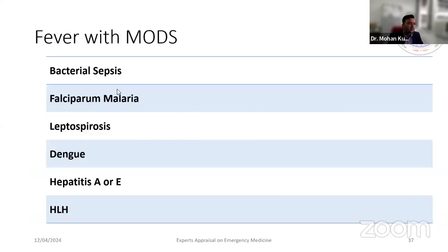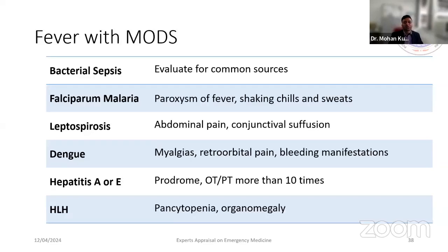For fever with multi-organ dysfunction, consider bacterial sepsis — look for local sources, most commonly respiratory, UTI, catheter-associated, or skin and soft tissue infections. Hepatitis illness can also lead to MODS with a prodromal history. Hemophagocytic lymphohistiocytosis (HLH), either primary or secondary to dengue, scrub typhus, or malaria, can present with pancytopenia.